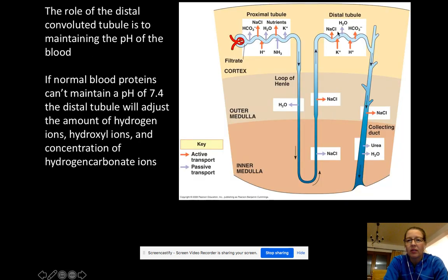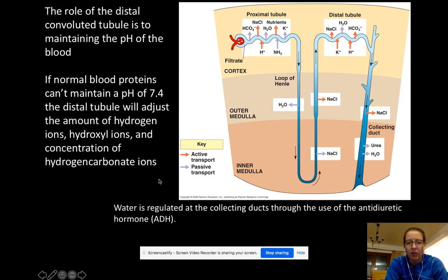Then it's going to enter the distal convoluted tubule. And this is essentially to help maintain the pH of the blood. And it'll put some buffers in if necessary. So normal blood proteins can maintain the pH of 7.4. The distal tubule will adjust the amount of hydrogen ions that it'll take out or put into the blood, or into the filtrate and put into the blood and sort of allow that last little bit. And I think I also read that there can be continuing to load of toxins and other things. And then after it gets here into the collecting duct, this is where we're going to really regulate water using the antidiuretic hormone, ADH.